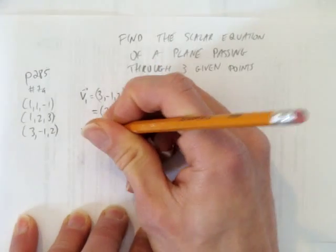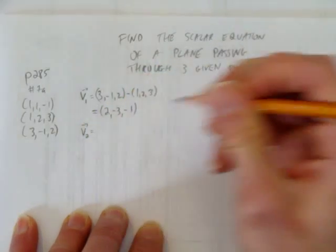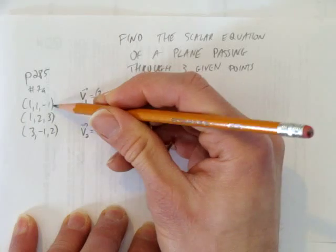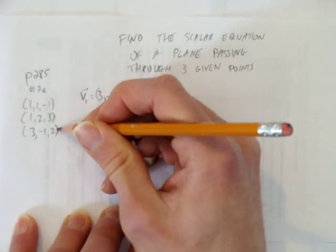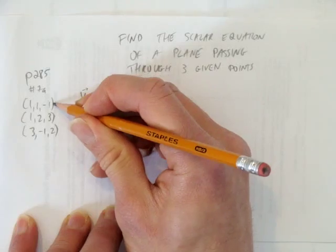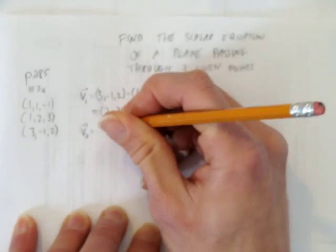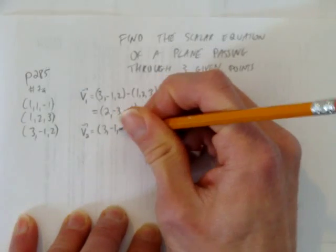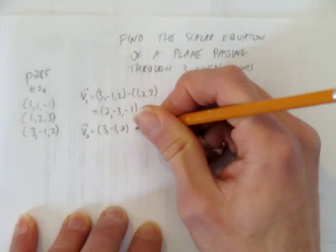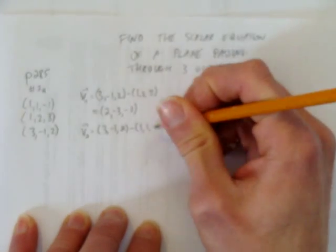Got my first direction vector. I'll get a second direction vector by doing, I could have used these two points, but I'm going to go with this take away this. In other words, I want a direction vector from point 1 to point 3. So, I'll start with (3, -1, 2) and I'll subtract (1, 1, -1).